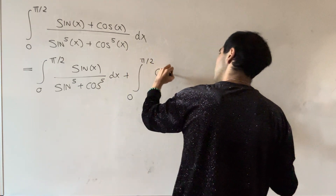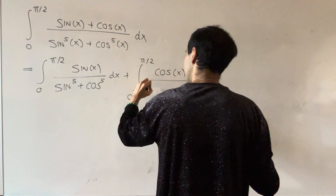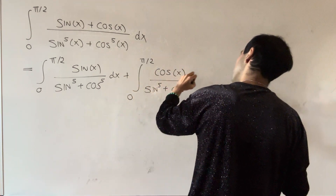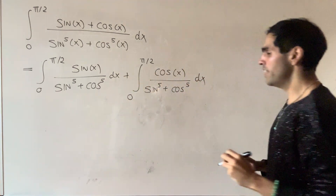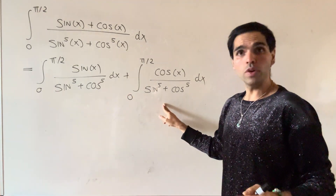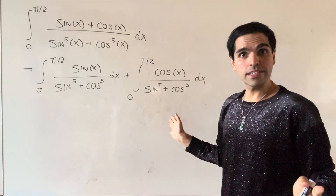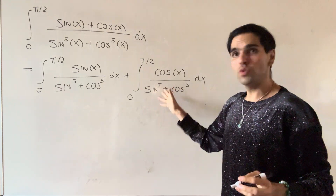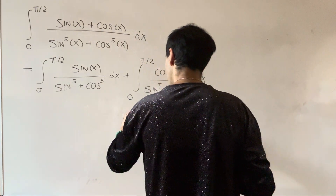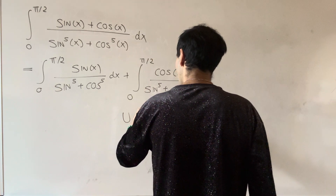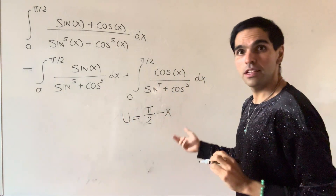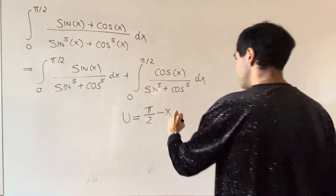The cool thing is those two integrals are the same, simply by using a u-substitution. For the second one, you can use u equals pi over two minus x, then du is minus dx.